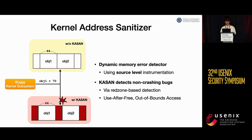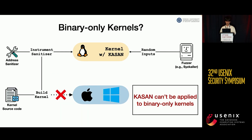What is KASAN? We need to detect bugs that do not cause kernel panic, and KASAN is used for this purpose. KASAN is a source code-based dynamic memory error detector that detects non-crashing bugs such as use-after-free and out-of-bounds access through region-based detection. It assists a lot when detecting such bugs. Unfortunately, KASAN needs source code instrumentation, so it cannot be applied to binary-only kernels or drivers.